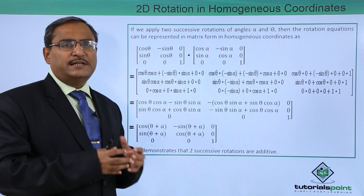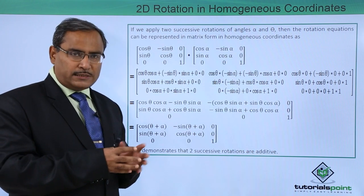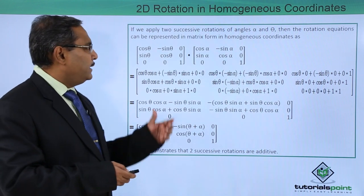If we apply these two angles rotation, then in that case our intuition says that the resultant matrix will be nothing but the summation of this alpha plus theta rotation. Let us go for that.